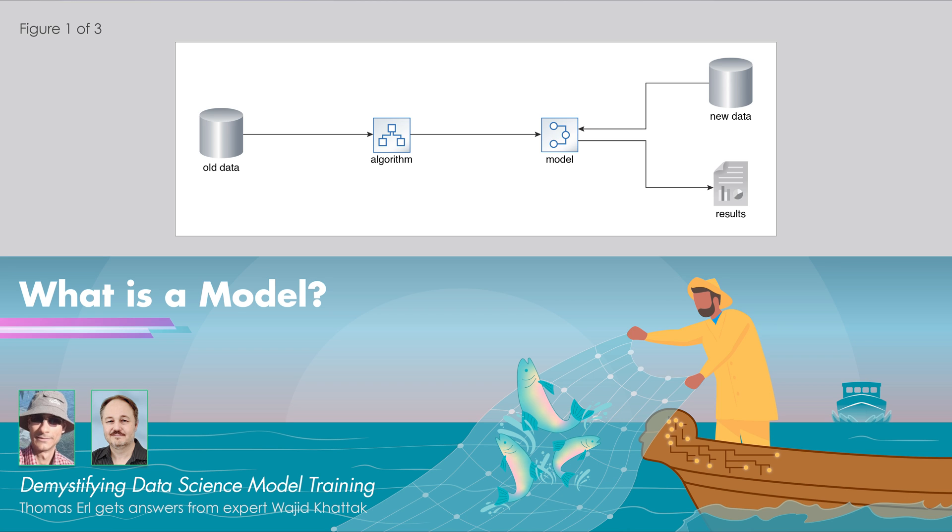The learned values of m and b, going back to our linear regression - that's the actual intelligence that we have learned from the data. However, that would exist in the form of some sort of piece of software.